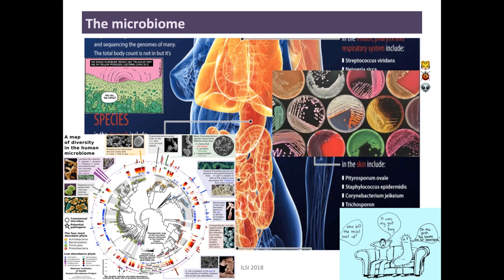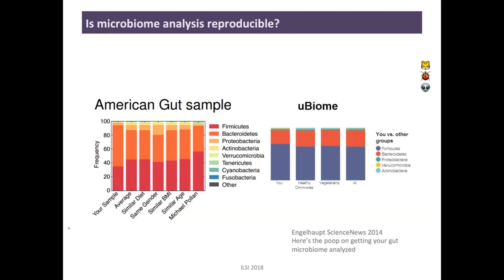I'm going to start off by talking about problems with microbiome analysis. The first question is: is microbiome analysis reproducible? I'm going to argue that as currently constituted, it's not particularly reproducible. This is a famous example where journalists sent the same gut sample — the same stool sample — to American Gut and to uBiome, and basically got back completely different answers. The relative composition of their stool sample was very different. This became the rationale to start working on reproducible methodologies, including the Microbiome Quality Control Consortium, of which I participated.